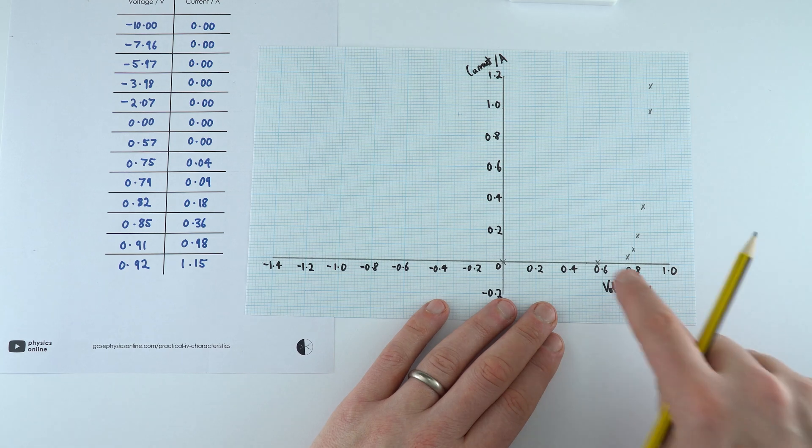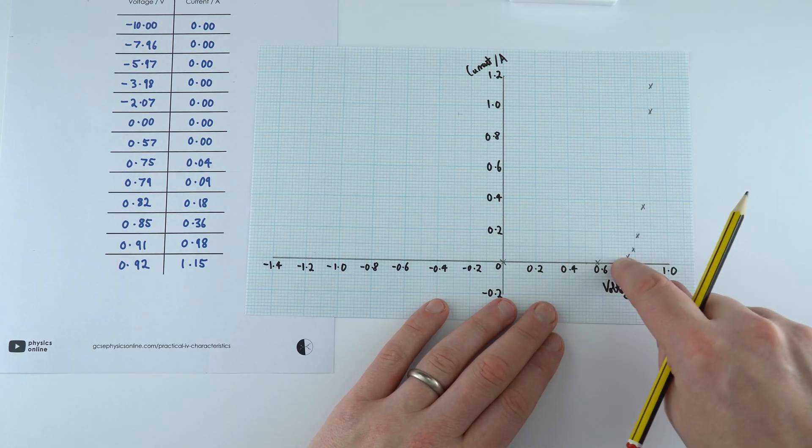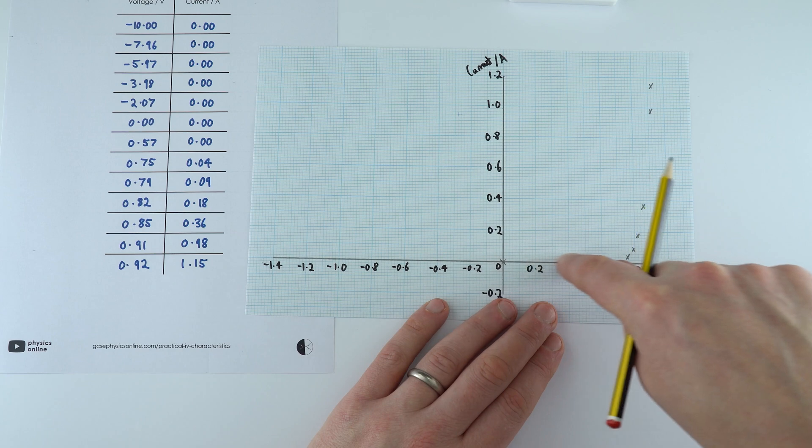So what I'm going to do is put in my line of best fit. It's going to be a curved line of best fit, and basically it's going to be zero all the way back over here.